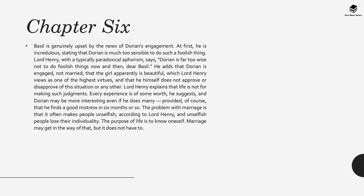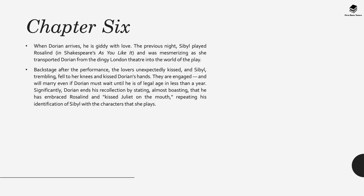Dorian then arrives, giddy with love and looking forward to Sybil's performance. He talks about the previous night when Sybil played Rosalind in Shakespeare's As You Like It and how mesmerised he was. Backstage after the performance, he says the lovers unexpectedly kissed—Sybil trembling and kissing Dorian's hands. He's delighted that they're engaged. However Dorian ends his recollection by stating, almost boasting, that he had embraced Rosalind and kissed Juliet on the mouth—both characters whom Sybil played—suggesting that perhaps he's in love with the ideal that Sybil represents rather than Sybil the woman herself.